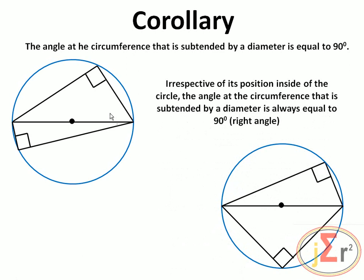Irrespective of the position on the circle, the angle at the circumference subtended by a diameter is always 90 degrees. Even if the angle appears very acute in the diagram, as long as it is subtended by a diameter, it is 90 degrees. We have several diagrams illustrating this — in each case the angle subtended by the diameter is 90 degrees.